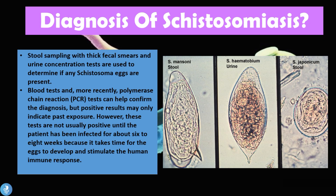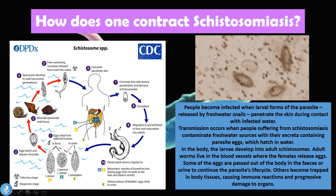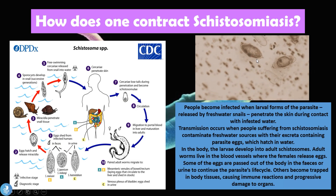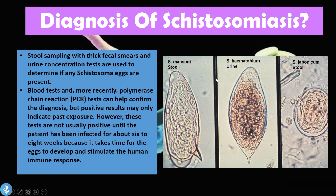To diagnose Schistosomiasis, stool sampling with thick fecal smears and urine concentration tests are used to determine if any Schistosoma eggs are present. Blood tests and, more recently, polymerase chain reaction (PCR) tests can also help confirm the diagnosis, though positive results may only indicate past exposure. These tests are typically not positive until the patient has been infected for about six to eight weeks, because it takes time for eggs to develop and stimulate an immune response. Under the microscope, the eggs of the different Schistosoma species show slightly different shapes.